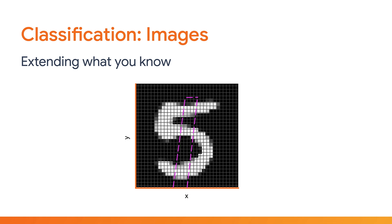And contrast this to say the number five, and you can see how many of the white pixels are outside the bounds of the found lines for the number one, with only 30% inside. From this, you can see from a high level at least, how you might be able to train a system to tell them apart, with neurons looking for different features in different parts of the image.